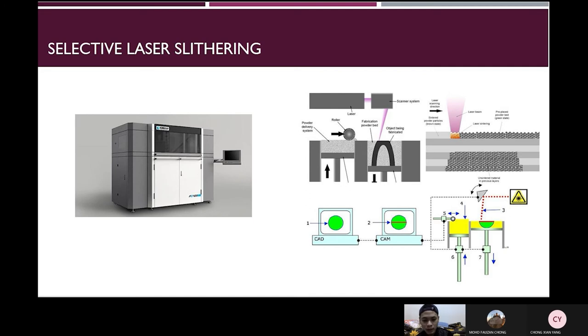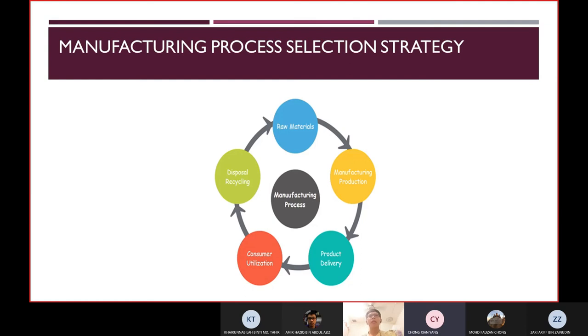This is the example of selective laser sintering. And the next picture is the process of the selective laser sintering machine. As you can know, the raw material is processed into manufacturing production, and then the product delivery will take place after the production stage is done. After that, there will be customer utilization for our process. And last, the disposal recycling is taking place before it is returning into the raw material.